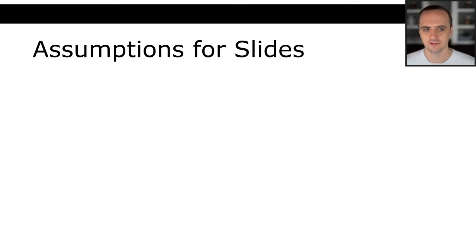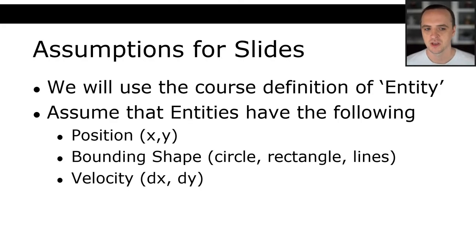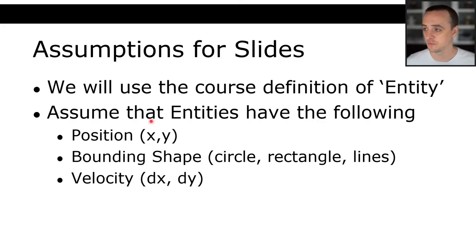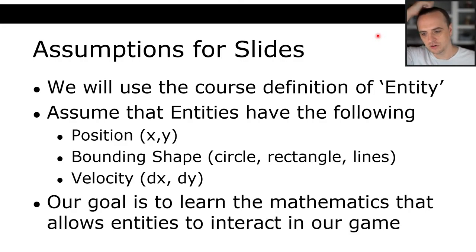We're going to make some assumptions for these slides using the course definition of entity. We're going to assume that entities have the following properties. Anything that is going to be able to collide needs to have a position, a bounding shape — in this lecture we'll be talking about rectangles — and a velocity, which is the change in x and y position for each frame. Our goal is to learn the mathematics that allows entities to interact in our game.